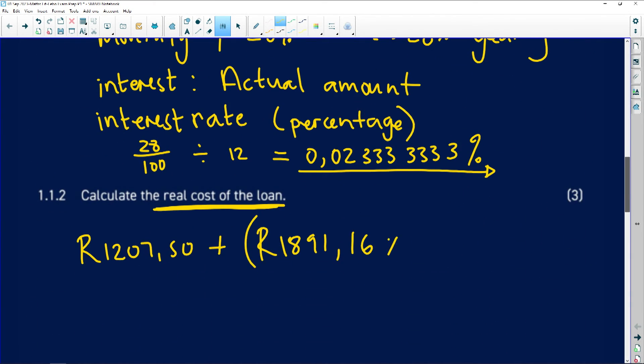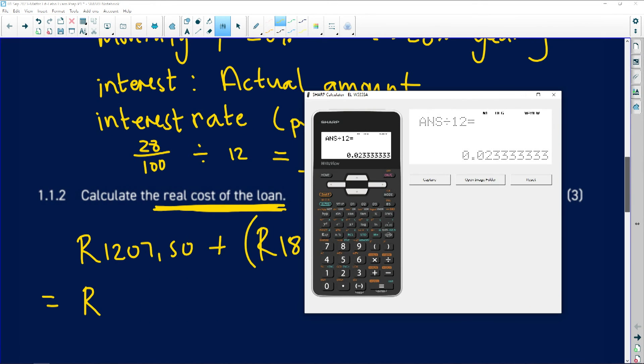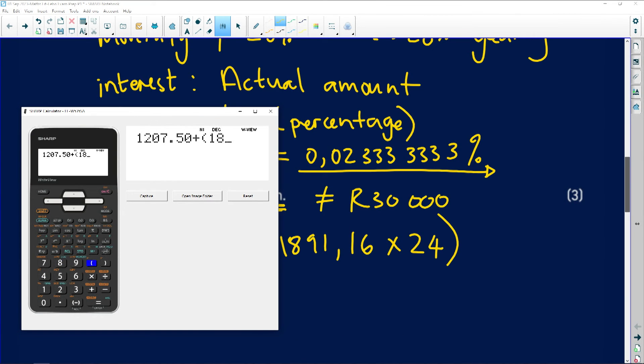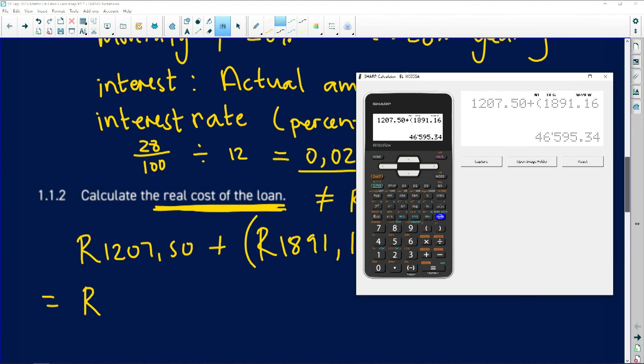But remember you are paying this money back for 24 months. So just be careful when they say real cost of the loan, it's not the 30,000 because the 30,000 is you loaning the money. So just know the difference between the two. So let's see what it would be in comparison to the 30,000 that you went and borrowed. 1,207.50 plus 1,891.16 times 24. Please, please, please do not make that mistake.